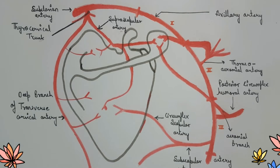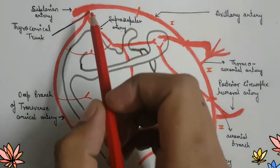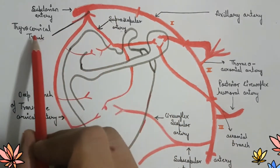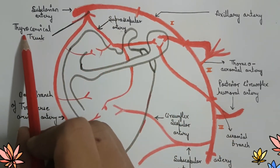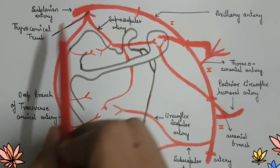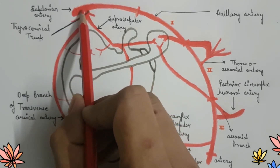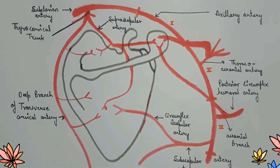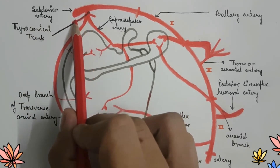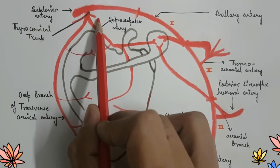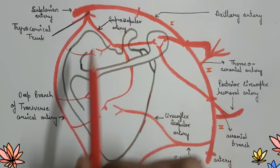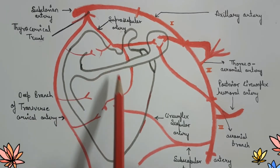Starting with the anastomosis over the body: the first part of the subclavian artery gives a large branch known as the thyrocervical trunk. The thyrocervical trunk further gives four branches, out of which only the suprascapular artery and the transverse cervical artery anastomose over the body of the scapula.